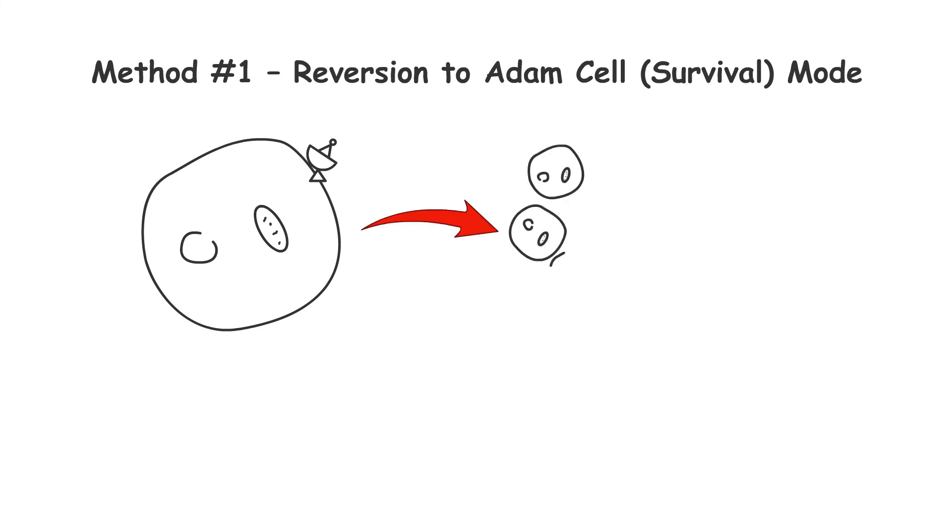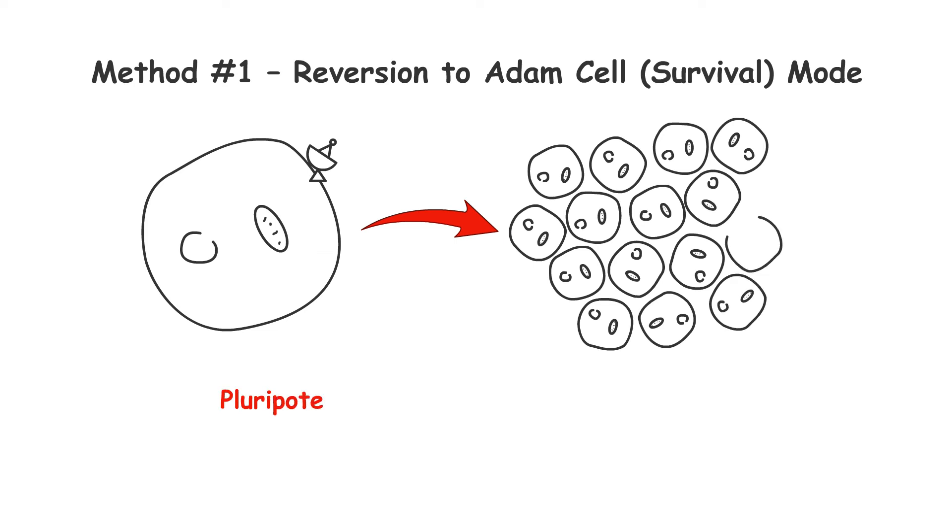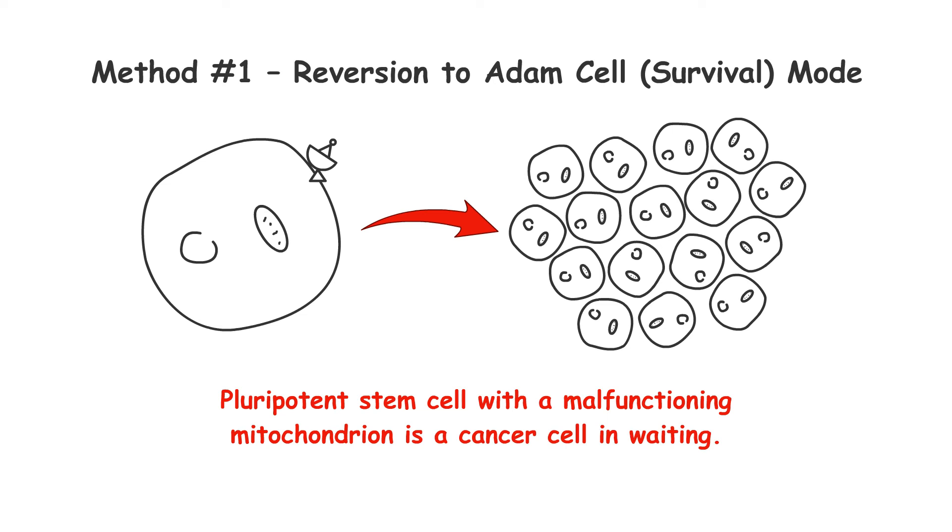To survive, the cell reactivates its original ability to divide on its own. Then, if the daughter cells also show the same propensity to divide, this pluripotent stem cell is effectively a cancer cell in waiting, hiding in the body, ready to divide at any time. This could explain childhood cancers such as leukemia or lymphoma.